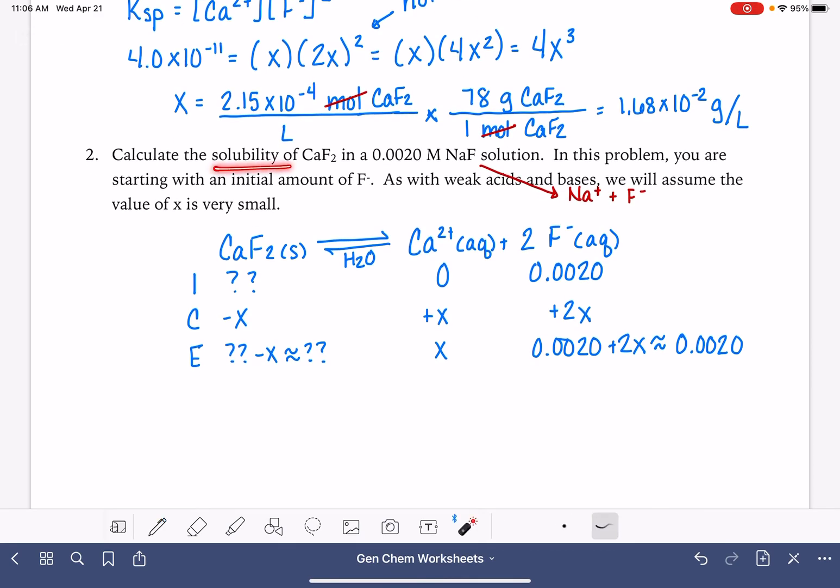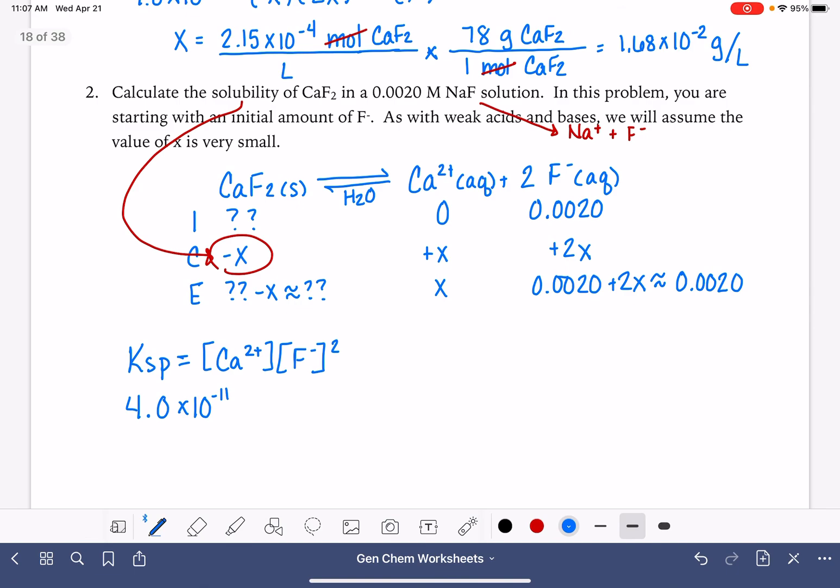What's the solubility? Again, we're being asked, what's the solubility? The solubility is always going to be reflected by x, so we need to solve for x. Ksp is our product, Ca2+, times our other product, F-, and that one needs to be squared because of its coefficient. The Ksp value is 4.0 times 10 to the -11, same value we used for the last problem. The amount of calcium is x. The amount of fluoride is 0.0020, and don't forget that it needs to be squared.